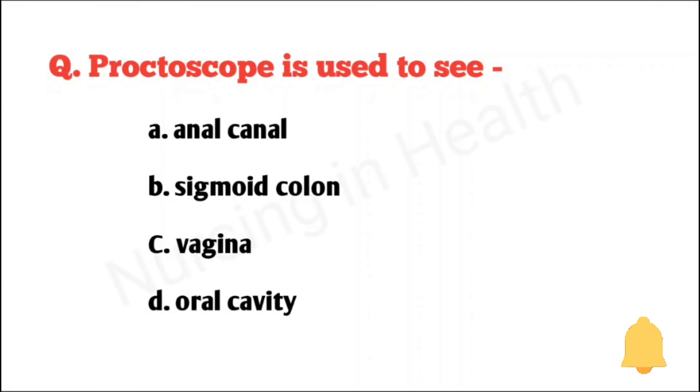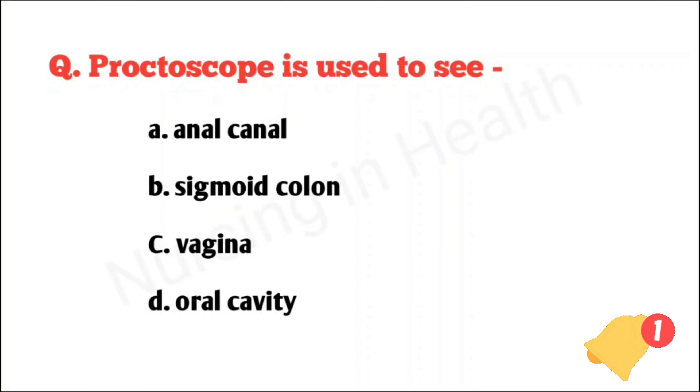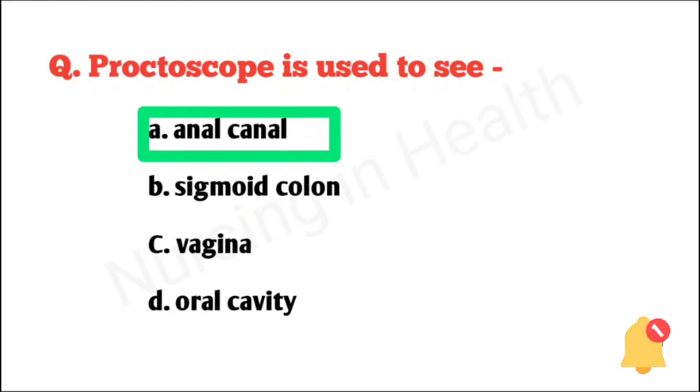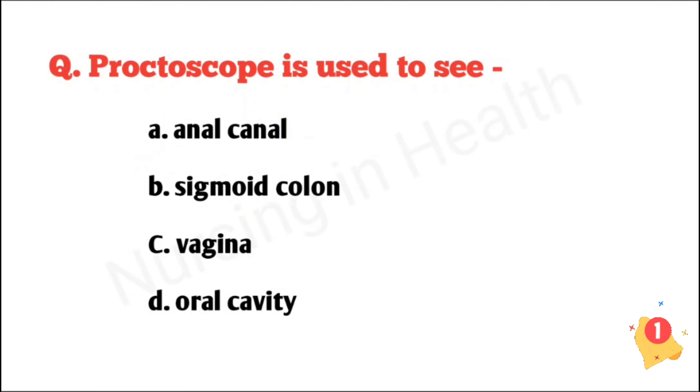Proctoscope is used to see: anal canal, sigmoid colon, vagina, or oral cavity. Right answer option A: anal canal.